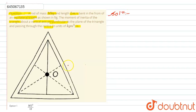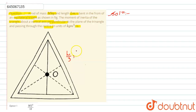We have to find the moment of inertia of the triangle about the vertical axis perpendicular to the plane of the triangle and passing through its center, that is point O. It is given that a rod of length L is bent in the form of an equilateral triangle, so the length of one side of the triangle will be L/3, and similarly the mass will be M/3 for one side.